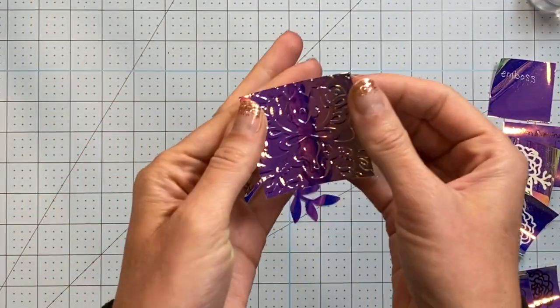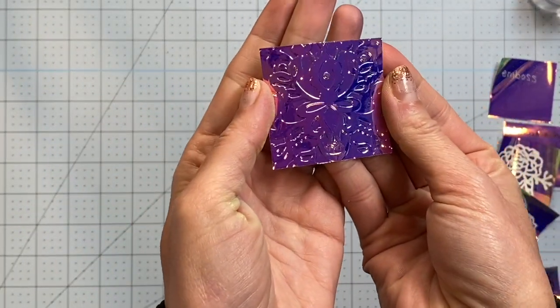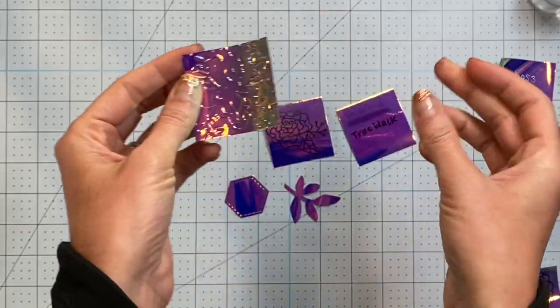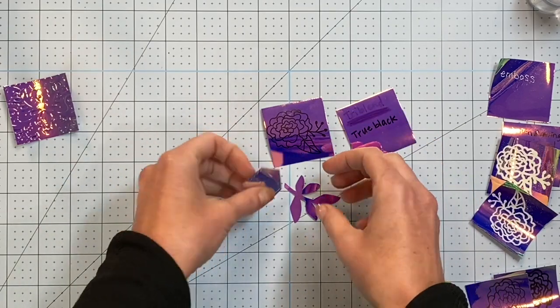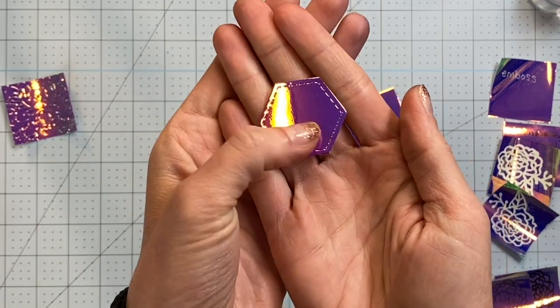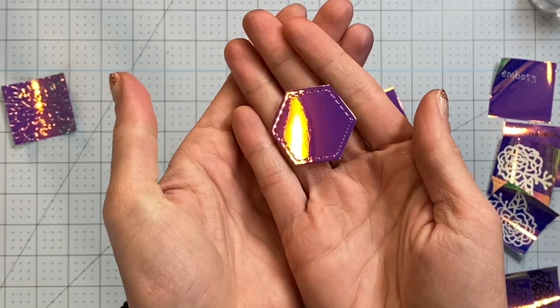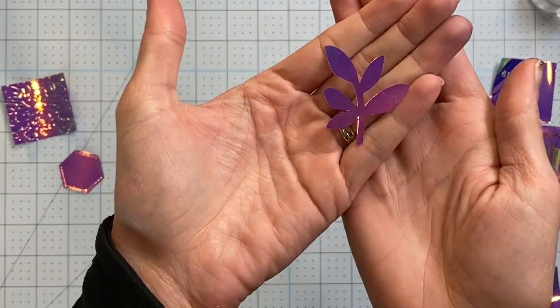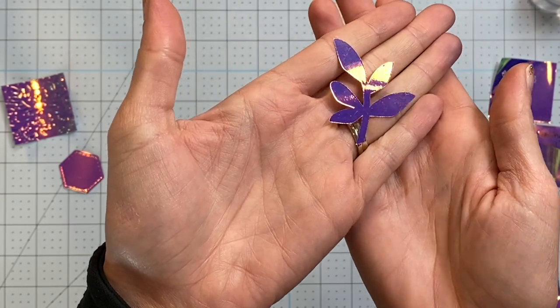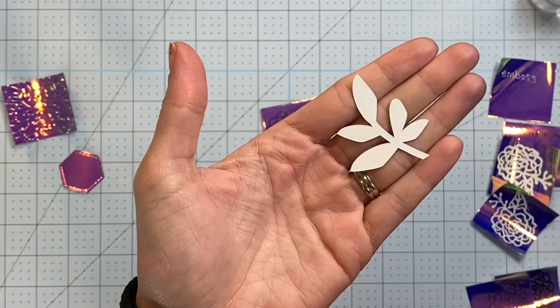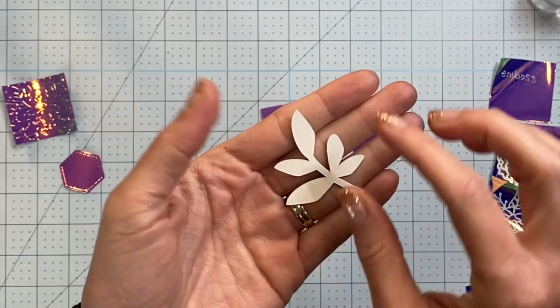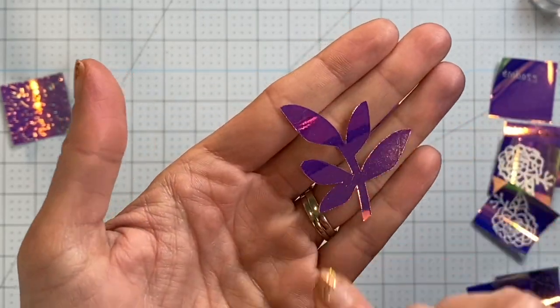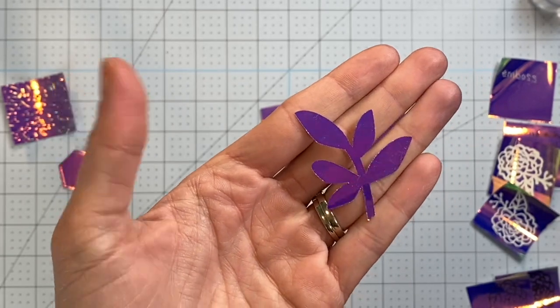I thought I would show you close up how amazing the embossing folder works on the holographic paper. And then, of course, we've got thin cuts. You can see the stitch lines and everything. The thin cuts cut beautifully, as does the Cricut cut. So what I did was I turned this upside down when I cut it so that that little ridge that always happens with the Cricut is going to be facing down so it looks more clean and finished.